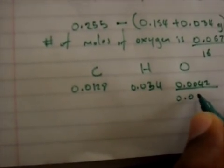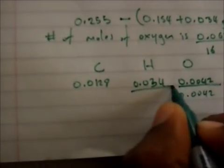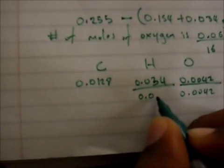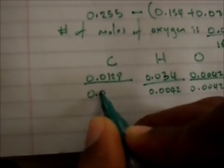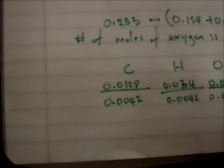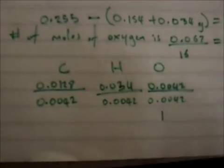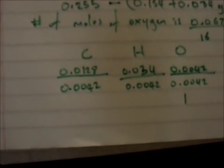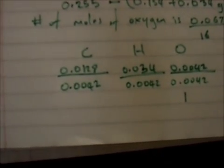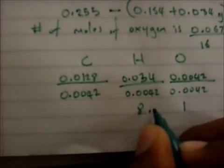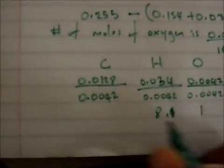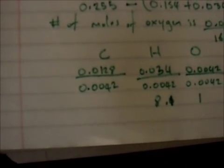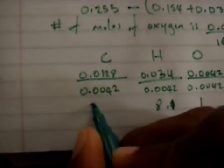To find the mole ratio, we divide each by the smallest value, which is 0.0042. So oxygen is 0.0042 divided by 0.0042, hydrogen is 0.034 divided by 0.0042, and carbon is 0.0128 divided by 0.0042. Calculating these gives roughly 1 for oxygen, roughly 8.1 for hydrogen, and roughly 3.05 for carbon.